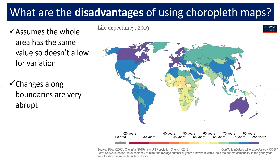Another key problem is that changes along boundaries are very abrupt. If we look at this map, here we have Algeria, and to the south of that we have Mali. According to this map, Algeria has a life expectancy approaching 80 years, somewhere between 75 and 80, whereas Mali has a life expectancy close to 60 years. In reality, crossing that boundary doesn't mean life expectancy drops by 20 years — it will be a much more gradual change. So the problem is that changes along boundaries are very abrupt.